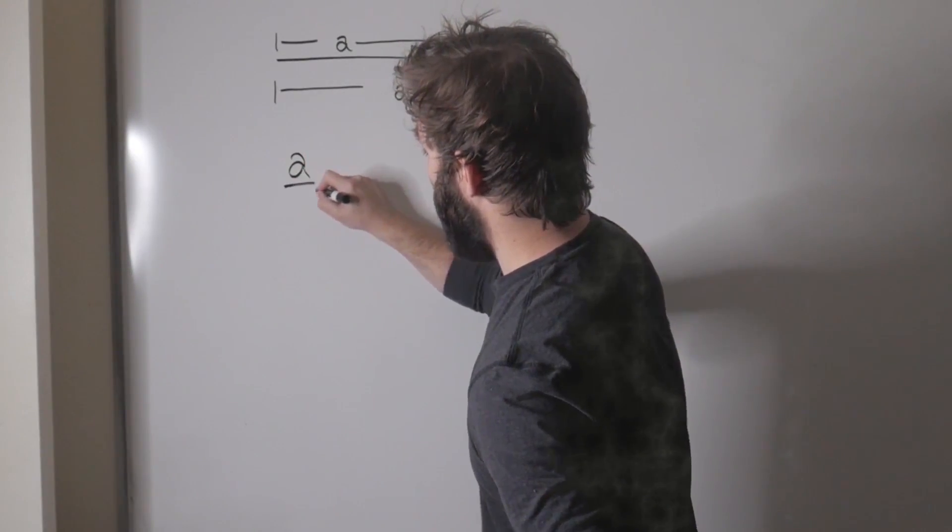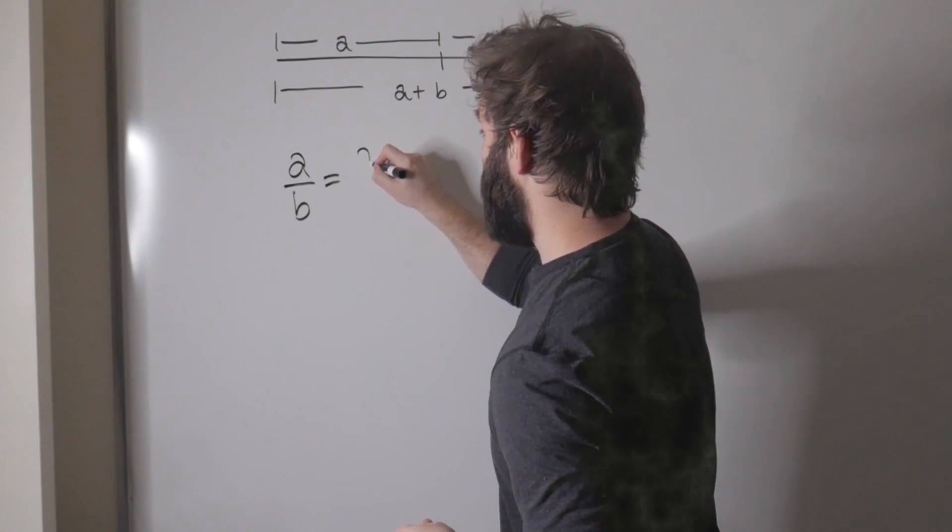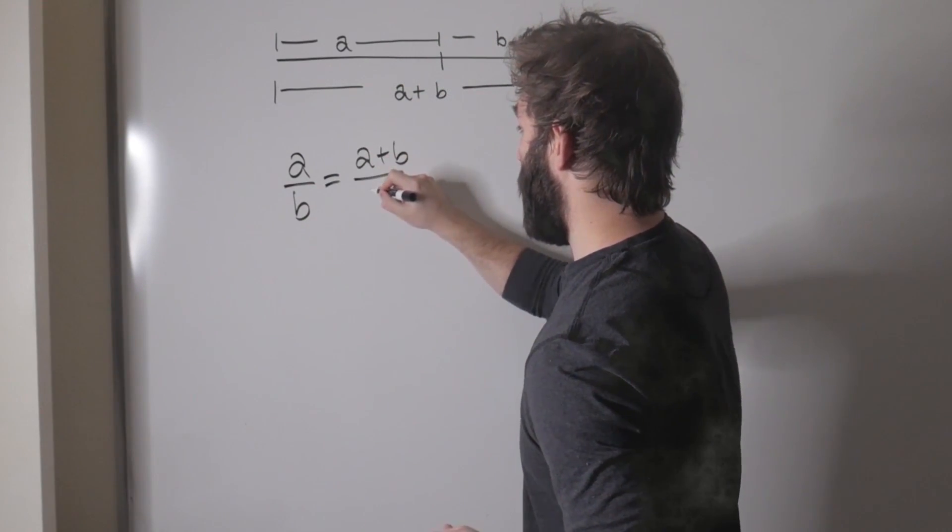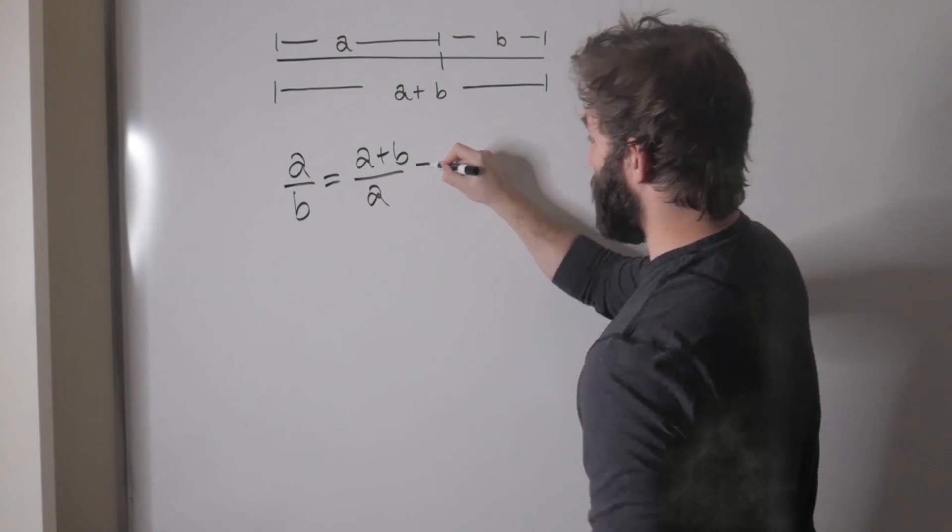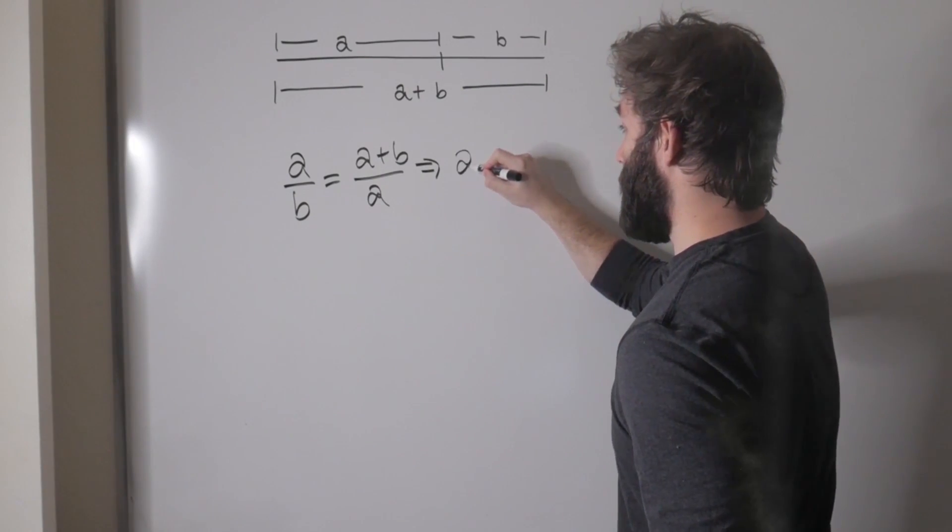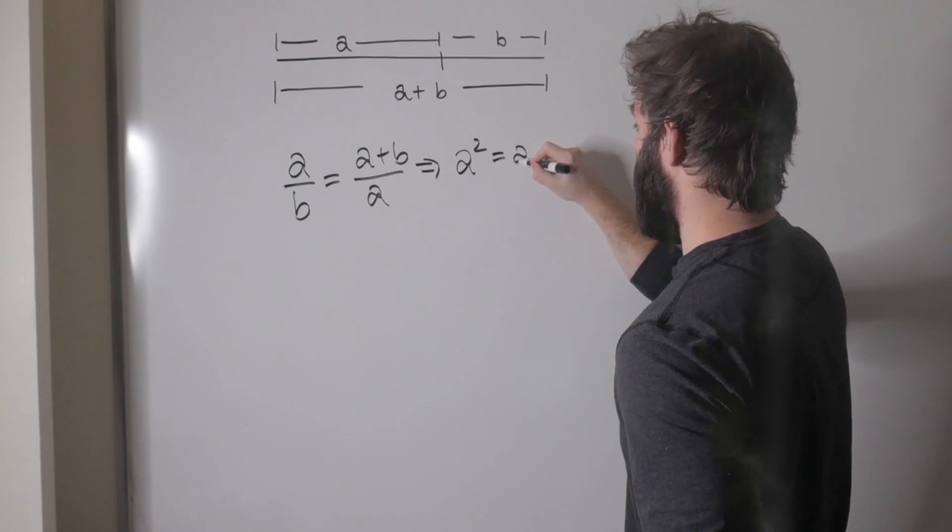So if we take the ratio of a and b, that should be equal to a plus b over a. Now if we multiply both sides by a and b, we get that a squared is equal to ab plus b squared.